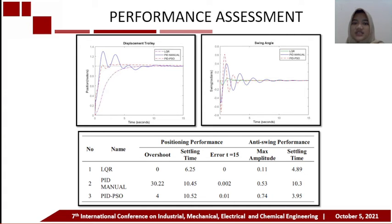The value of the settling time in position and performance of the three systems: LQR has the fastest settling time value, while PID-Manual and PID-PSO control system are not much different. PID-PSO has the fastest settling time value in the swing angle performance, but it has the largest max amplitude value. And the smallest max amplitude value is found in the system that implements the LQR control system.